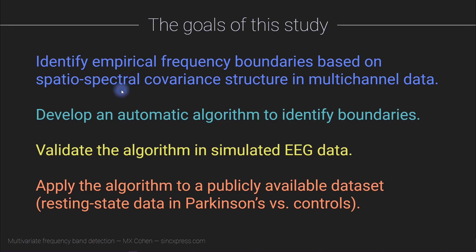The goals of this study were to develop an automatic algorithm that can identify empirical frequency boundaries based on covariance structures, narrowband covariance structures in multi-channel data. After explaining how the algorithm works, I'm going to show you some validations in simulated EEG data, and then an application of this algorithm to a publicly available data set, some resting state EEG data in Parkinson's patients.